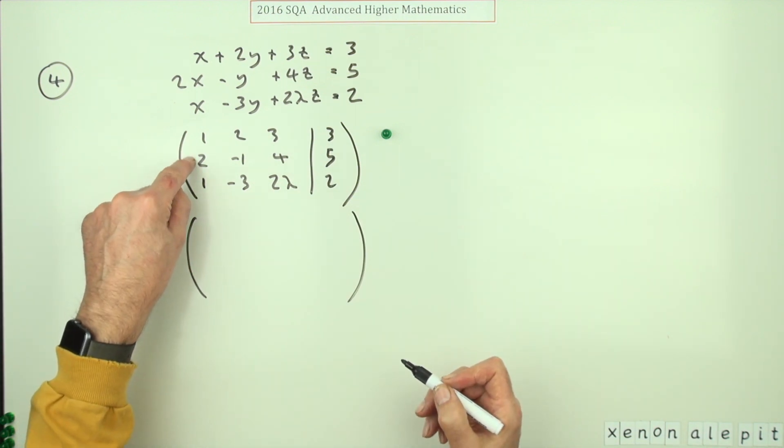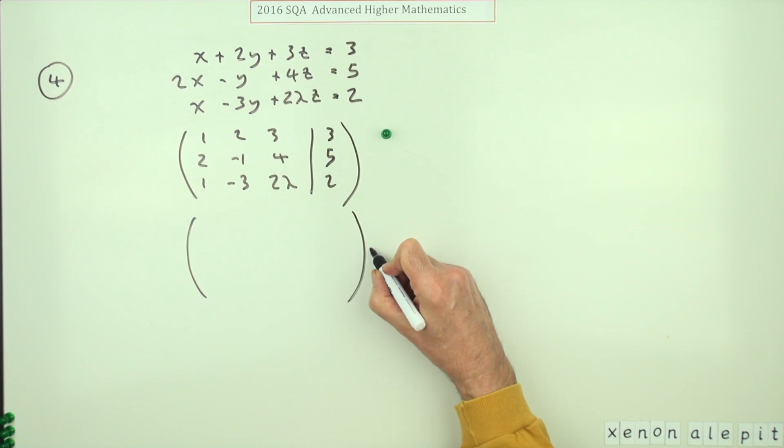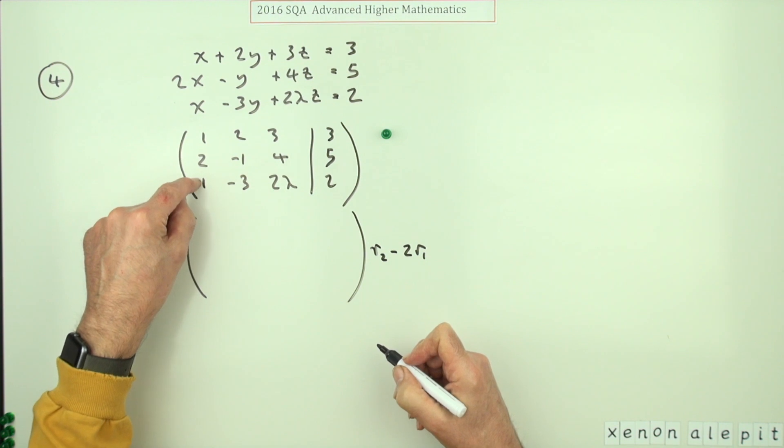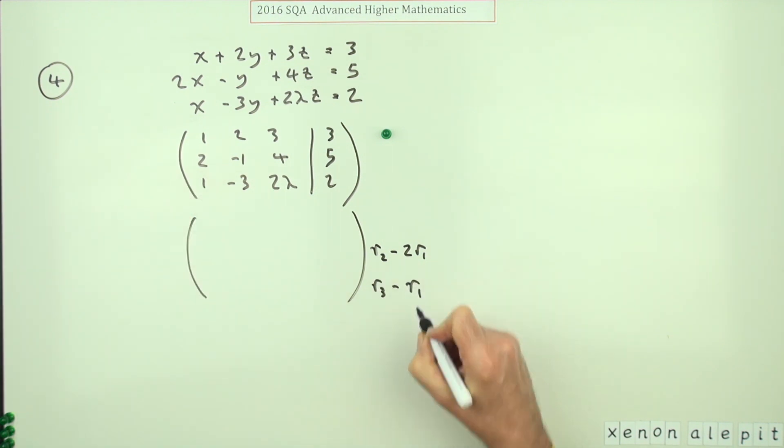So the plan here is obviously you leave that one alone. Now for this one, that means you want to take away two of them to knock that into zero. So row two would go to row two minus two lots of row one, and to make this into zero, that's just going to be row three goes to row three minus row one.